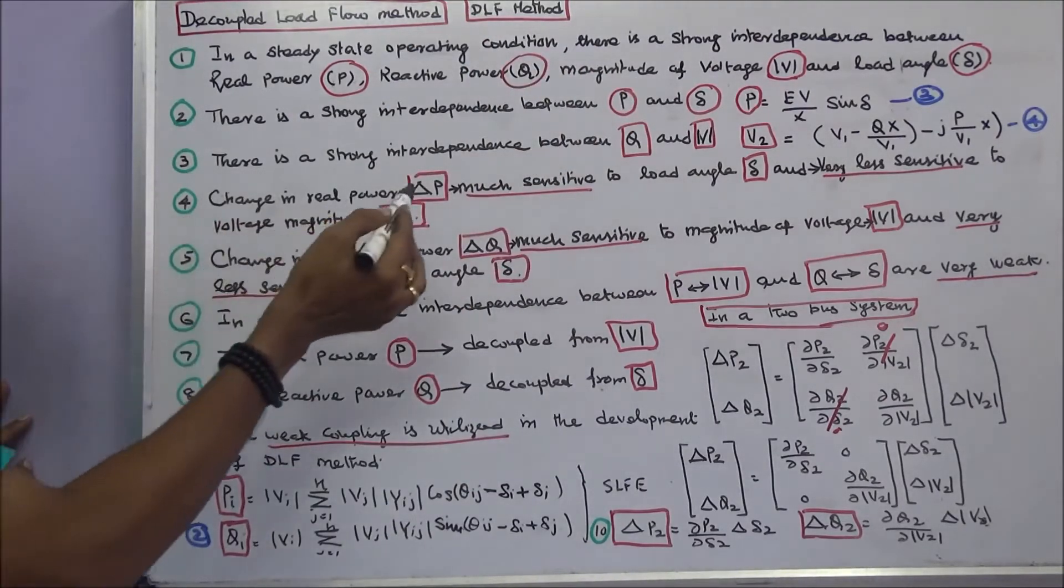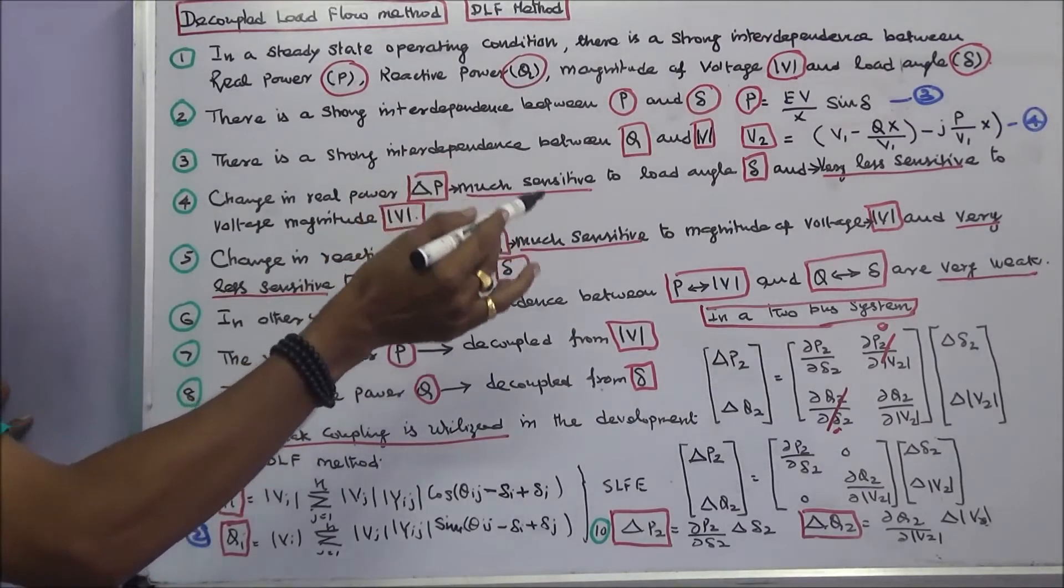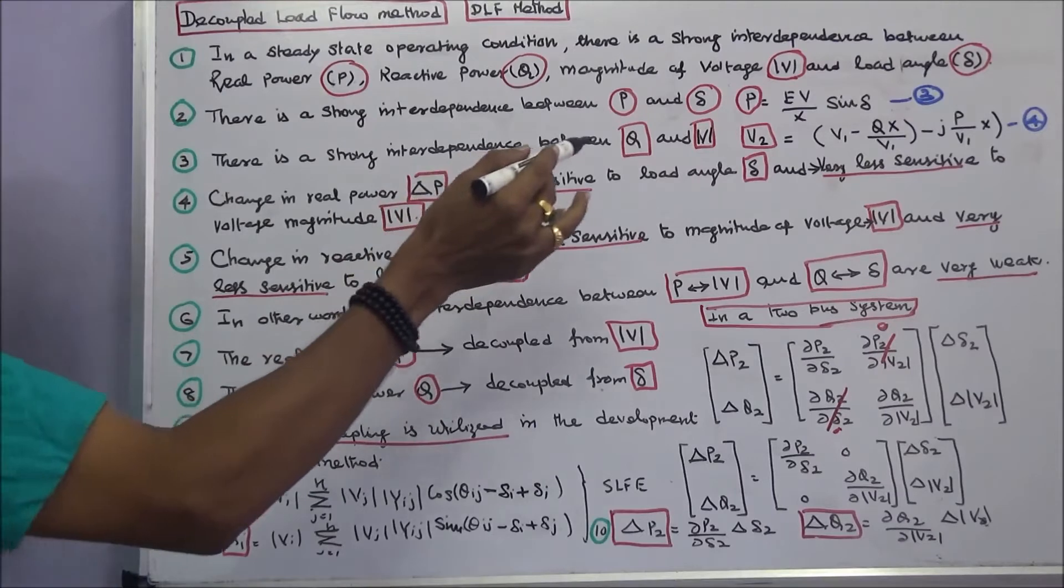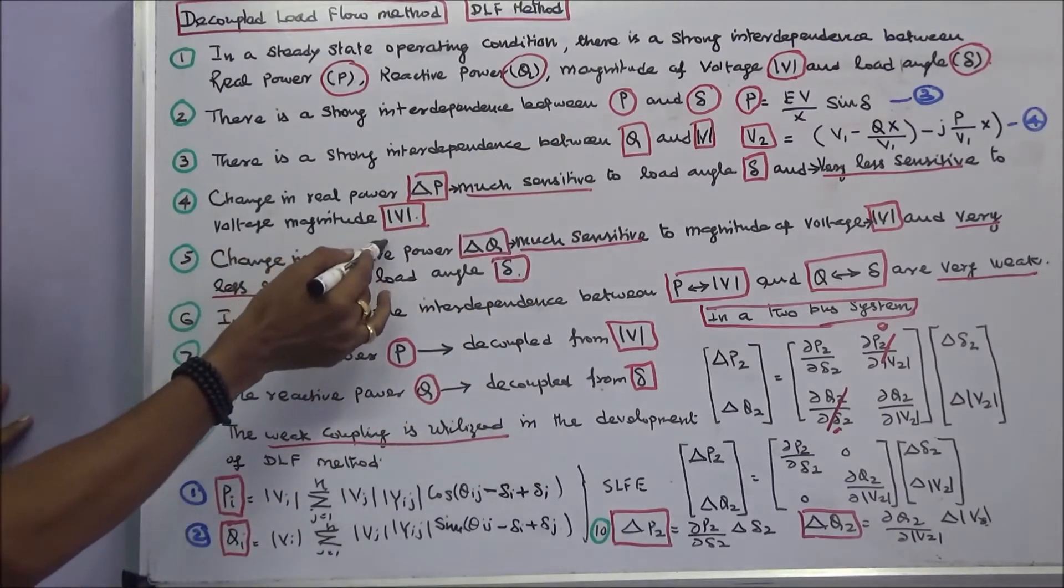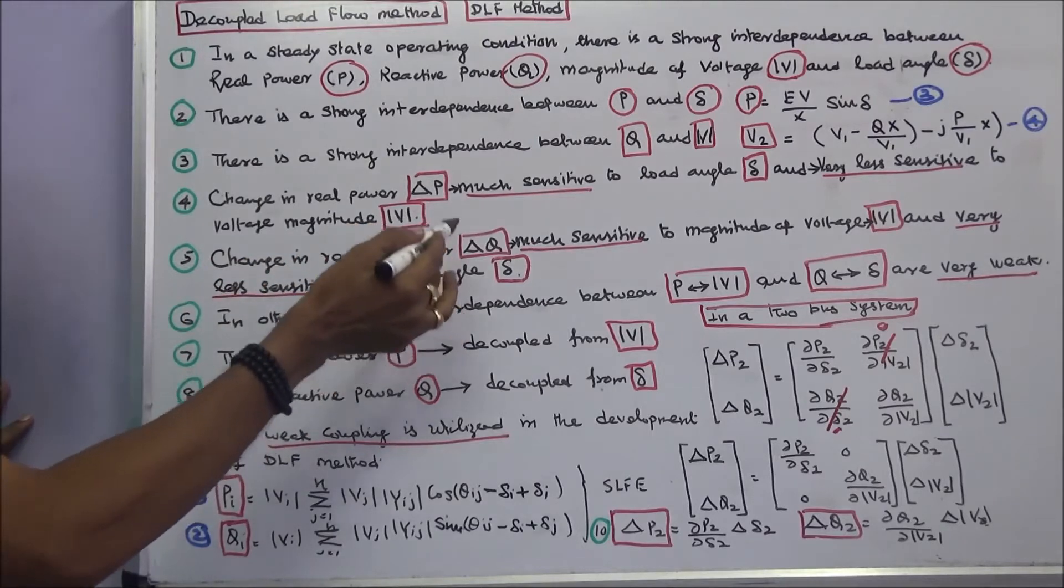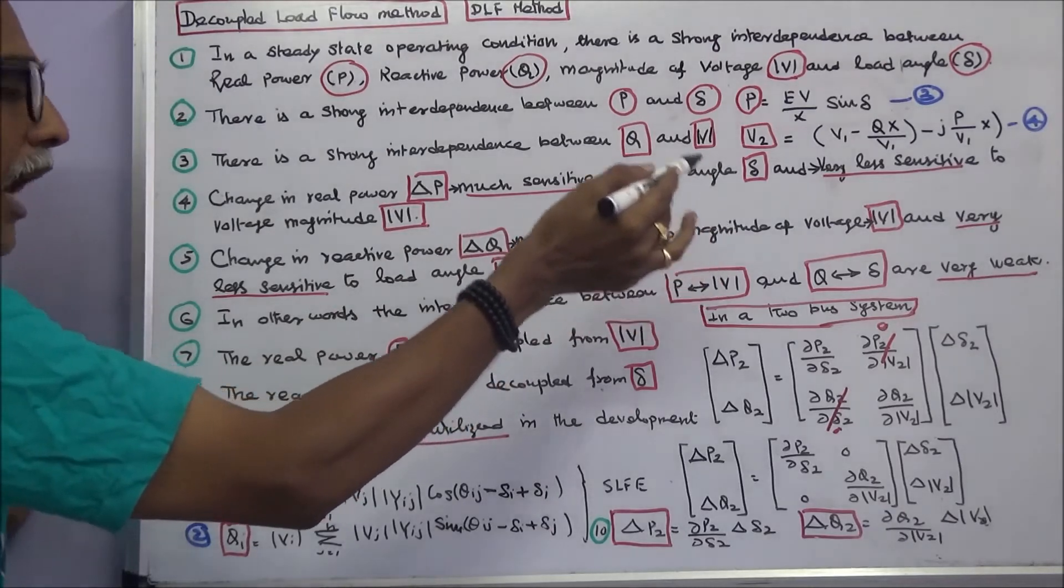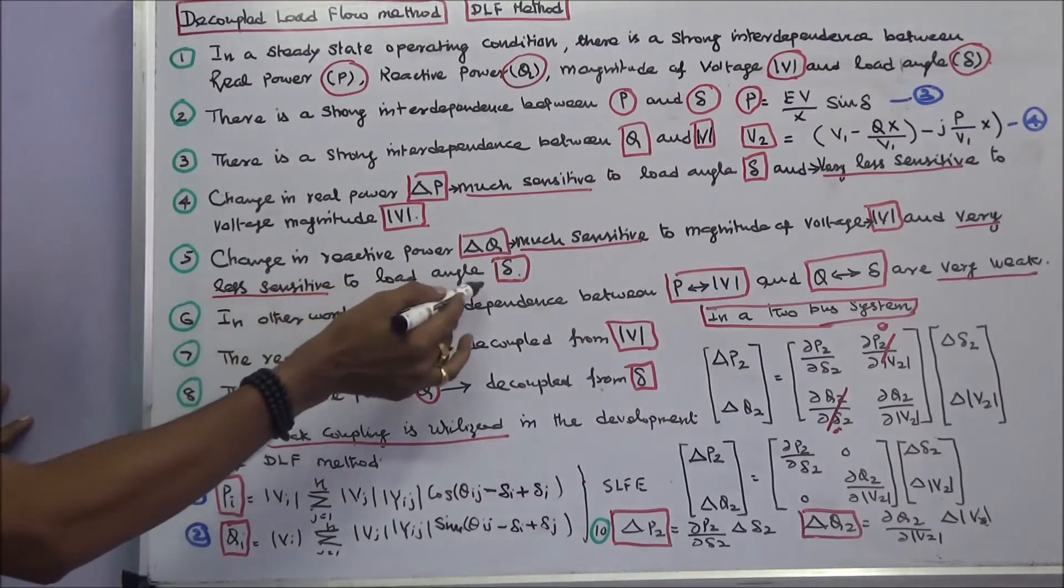Change in real power delta P is much sensitive to load angle delta and very less sensitive to voltage magnitude modulus of V. Change in reactive power delta Q is much sensitive to magnitude of voltage modulus of V and very less sensitive to load angle delta.